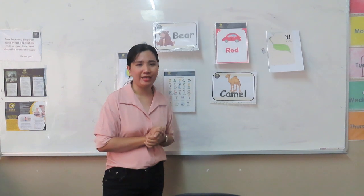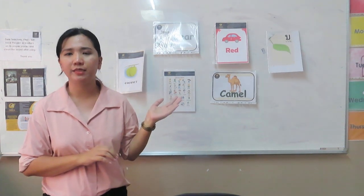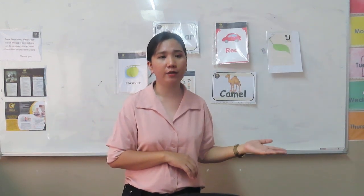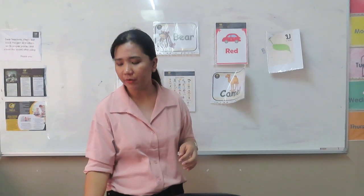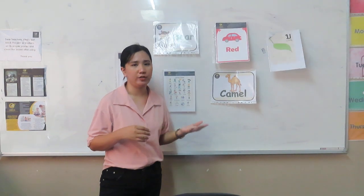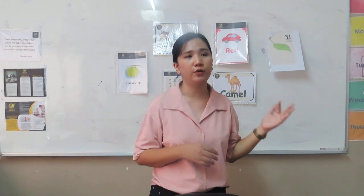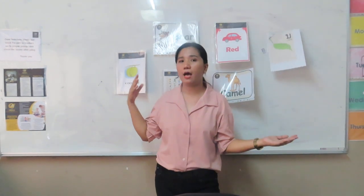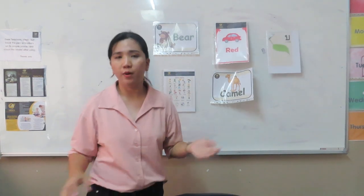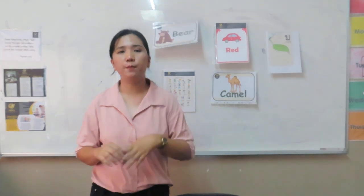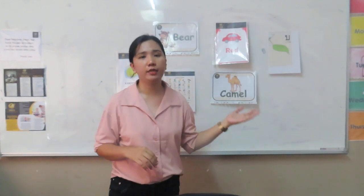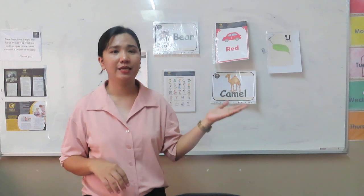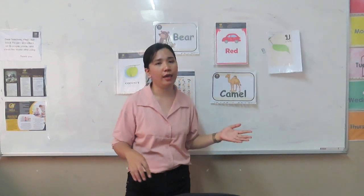Are you ready for our topic for today? Do you have any idea what our topic is based on our game? It is all about the environment. Our topic for today is biotic and abiotic factors. We will differentiate the difference between biotic and abiotic factors. Before that, what is an ecosystem? An ecosystem is composed of our environment — from water, to soil, to air, to plants and animals. Even us, we are parts of the environment. So we have the biotic and abiotic factors.